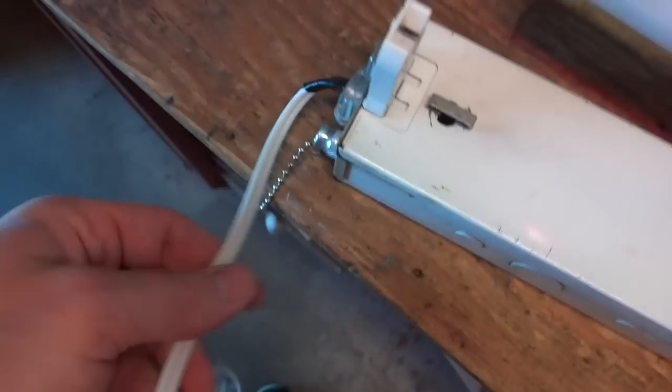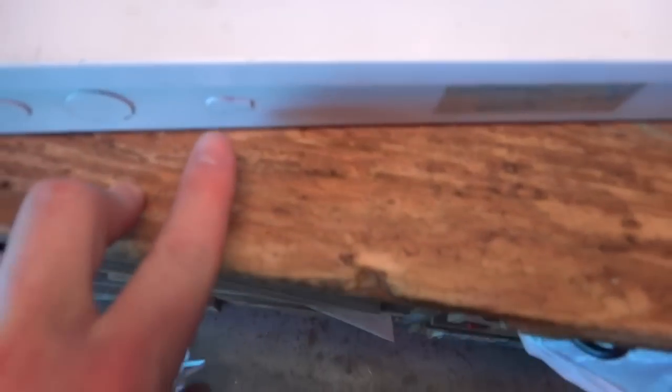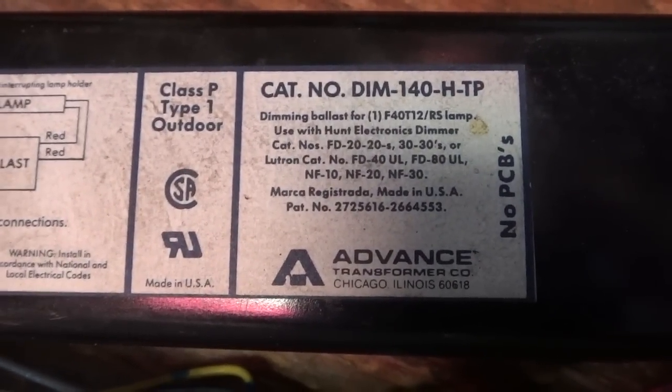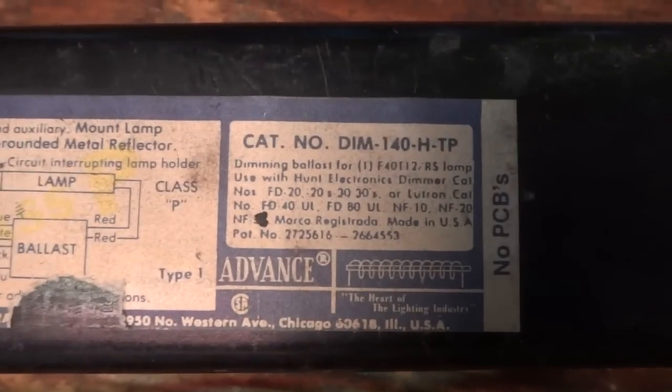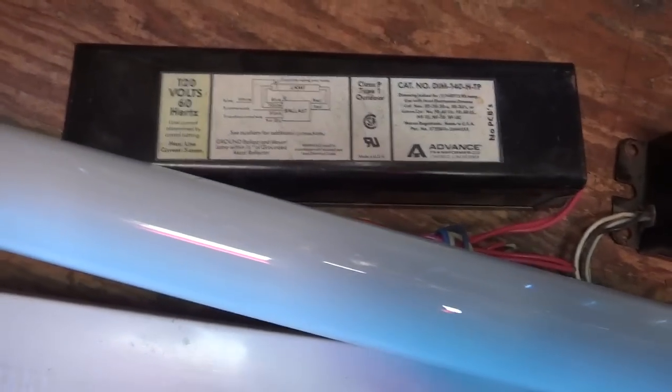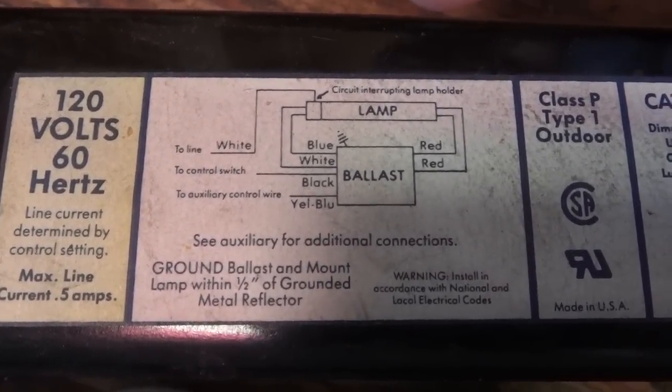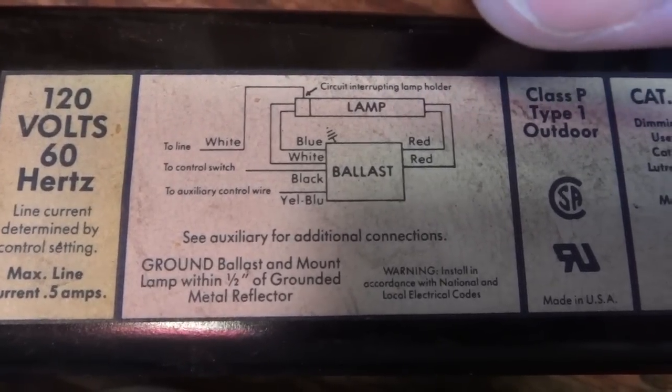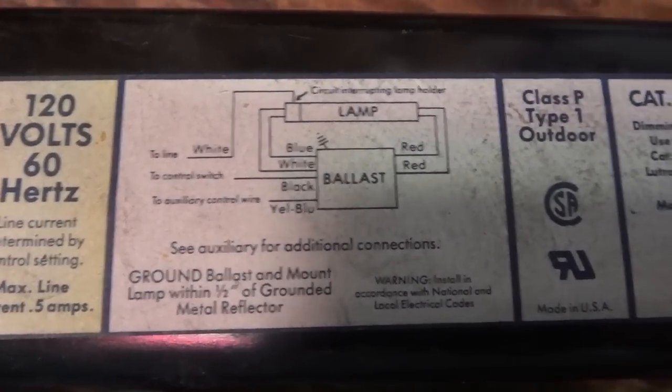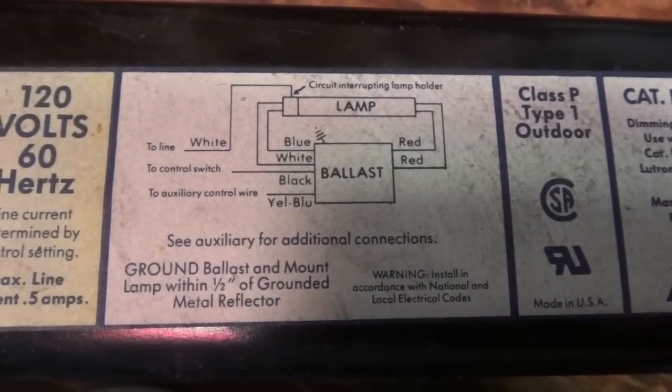And the switch works really well. Now these are dimming ballasts, so the dimmer will have to be outside here. But if a dimmer actually is small enough to fit inside the fixture, I might use one of these holes and put a rotary dimmer on it or something like that. It does require a specific type of dimmer, as you can see in the instructions here. However, I've heard using a standard incandescent dimmer also works just fine. Now another thing that is required here is a circuit interrupting lamp holder. I do not have any of those, but as long as you have a bulb in the fixture when it's on, you're fine. Just don't turn on the fixture without a bulb in it. That's what I've learned.